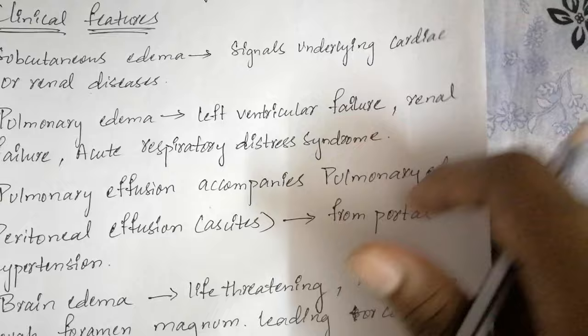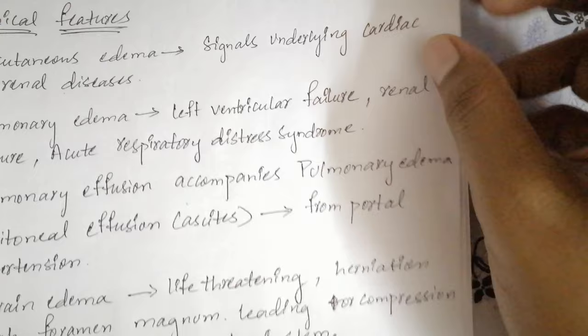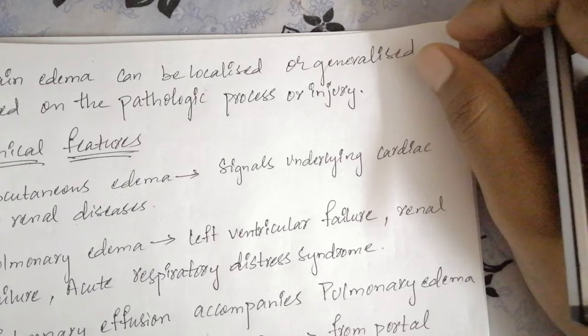Brain edema can be more generalized — where the whole brain is affected — or localized, where only a specific part of the brain gets edema and the rest does not. Which type occurs depends on the pathological process or injury involved.